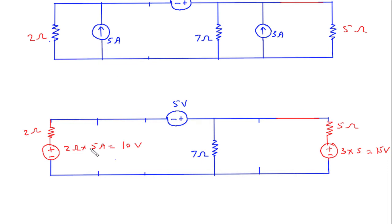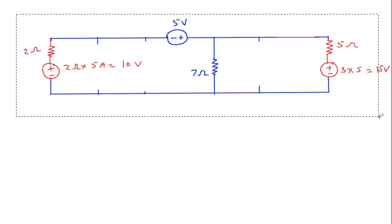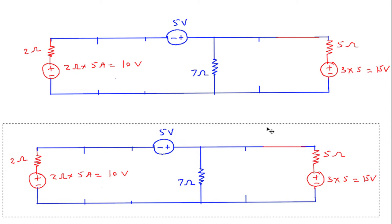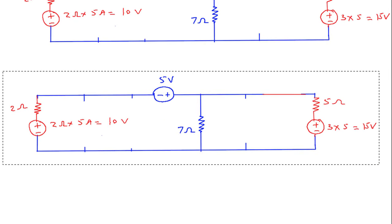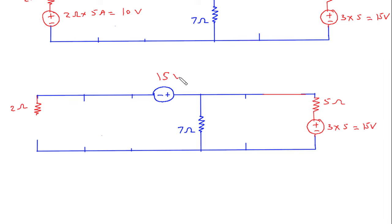Now as we can see, this is a 10 Volt voltage source and this is a 5 Volt voltage source, so we can add them. This will be 10 plus 5 equals 15 Volt.